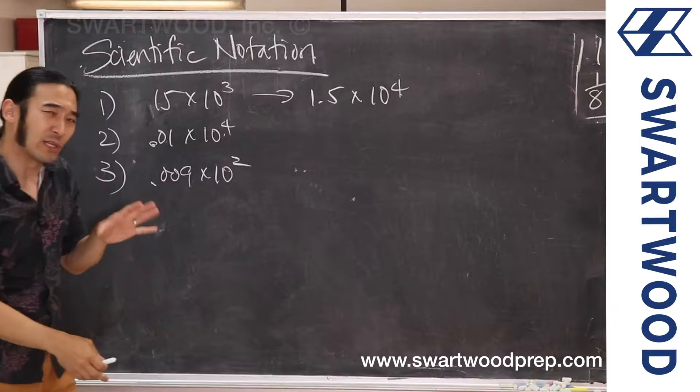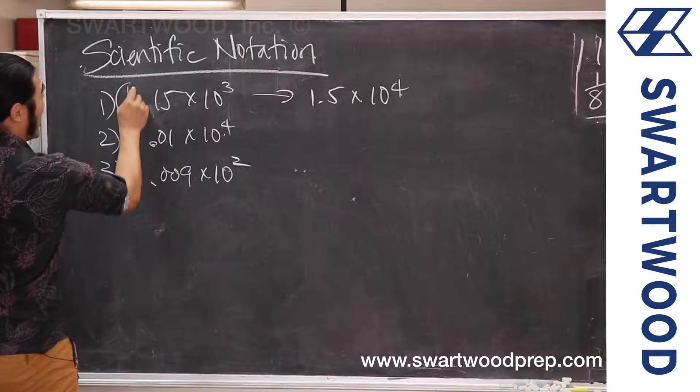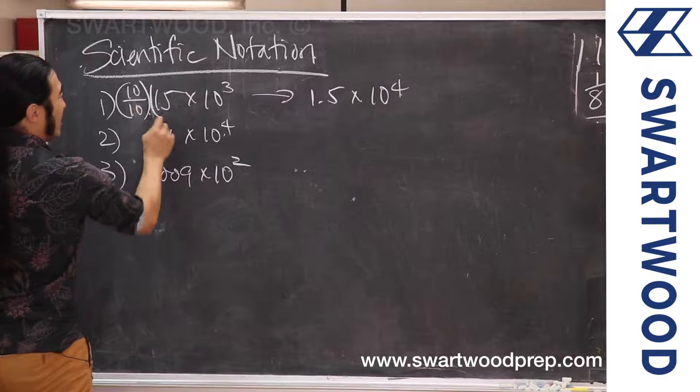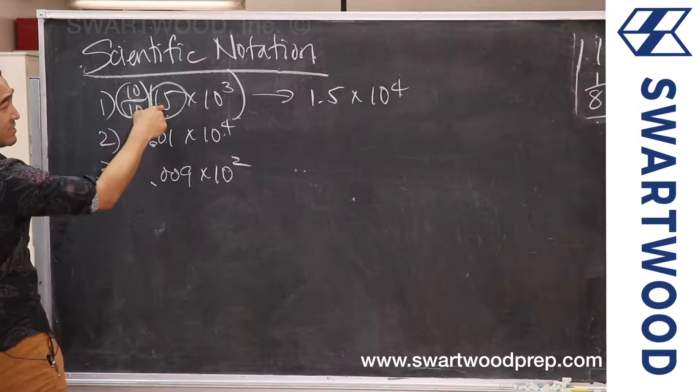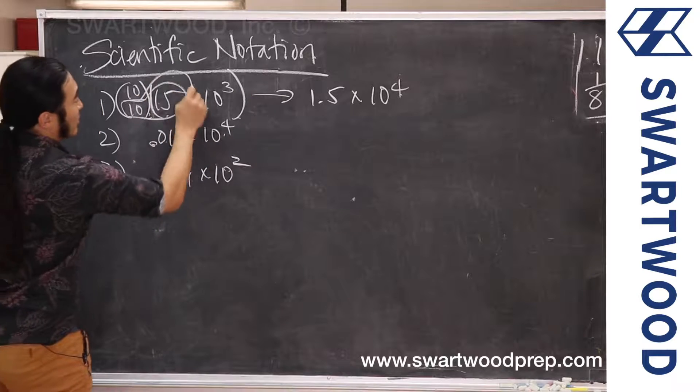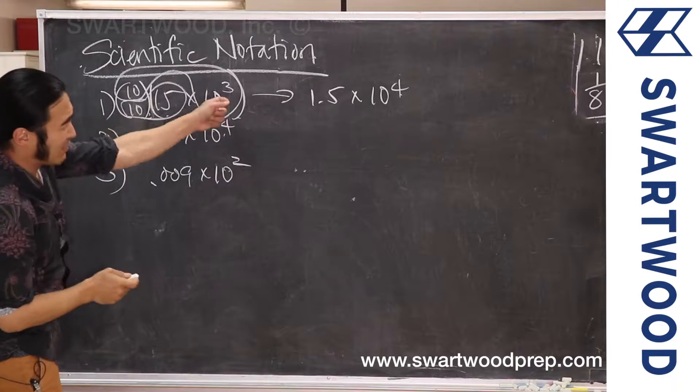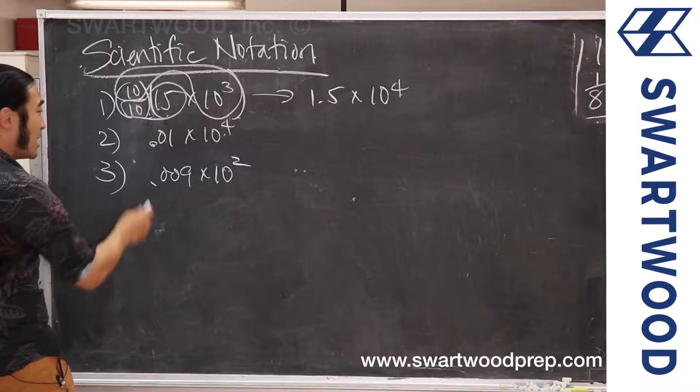And all we've really done in practice is multiply this entire number by 1, which doesn't change its value. It's just that here we divided by 10 to get it to 1.5, and then we took this part and multiplied by 10 to get 10 to the positive 4th.